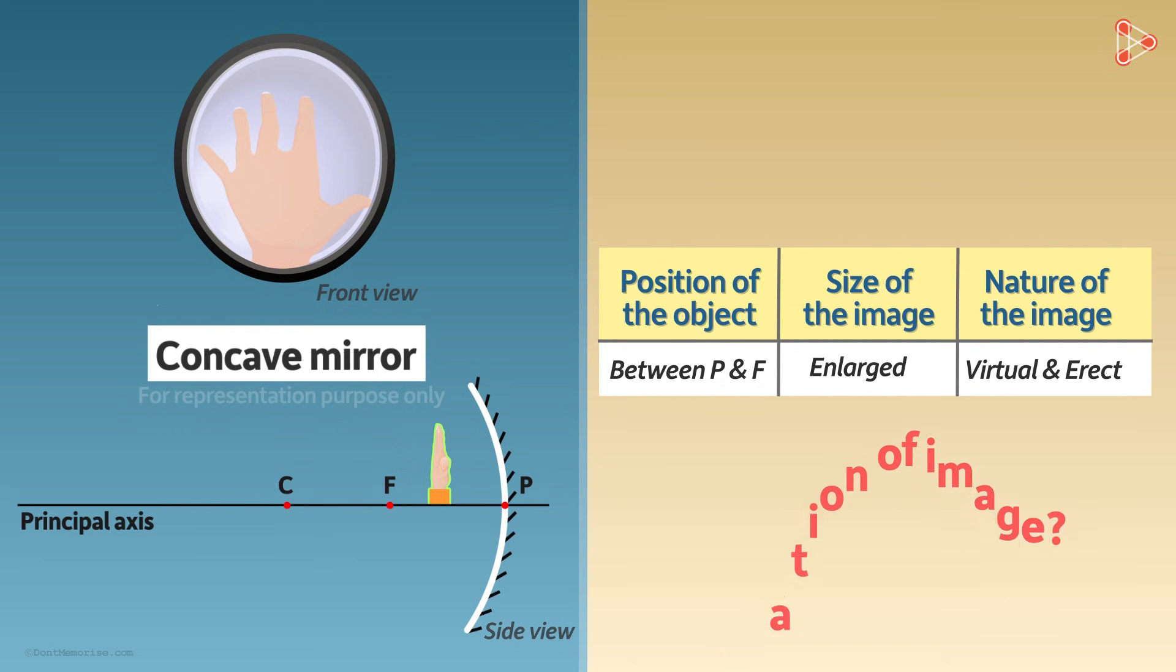For now, let's move this object away from the mirror and see how the dimensions and the nature of the image vary relative to the object. You will find that as I move this object away, its image gets even bigger. And when the object is at the principal focus, the image is huge.